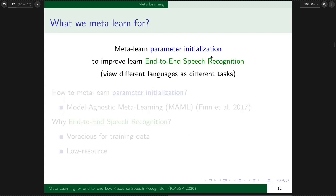In this work, we meta-learn initial parameters to improve end-to-end speech recognition. We view different languages as different tasks. We have two questions: how to meta-learn initial parameters, and why choose end-to-end speech recognition?